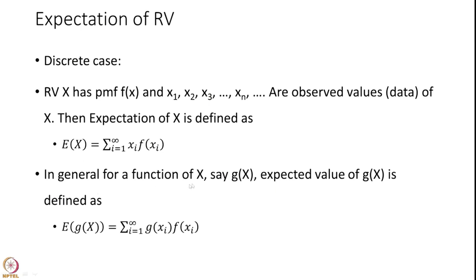In general, for a function of X, say g of X, the expected value of g of X is defined as E of g of X, which equals the summation from i to infinity of g of X_i multiplied by f of X_i, where f of X_i is the probability mass function of the random variable.